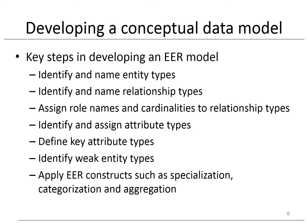Here you can see the key steps when developing an EER conceptual data model. We start by identifying and naming the entity and relationship types. Next, the role names and cardinalities are assigned to the relationship types. Attribute types are identified and assigned to either the entity or relationship types. Key attribute types are also determined and weak entity types are identified. Finally, EER constructs such as specialization, categorization, and aggregation are applied where necessary. It is very important that all these activities are typically executed iteratively, in close collaboration with the business user.